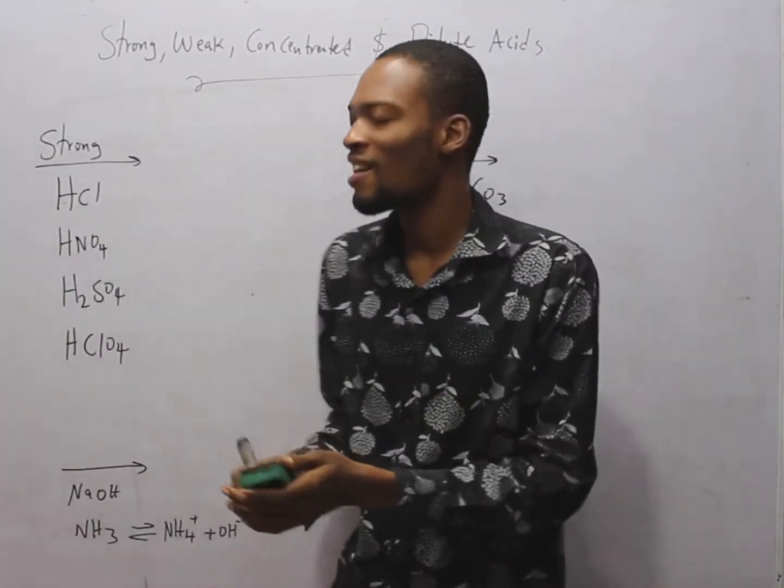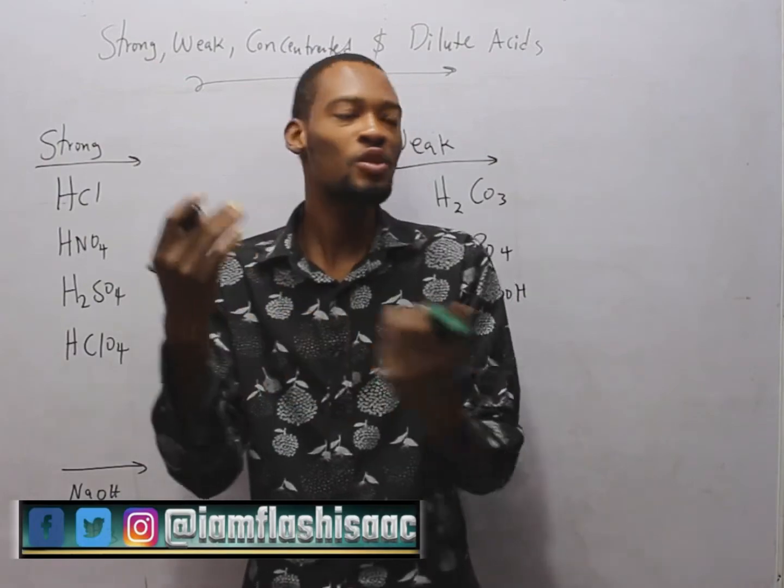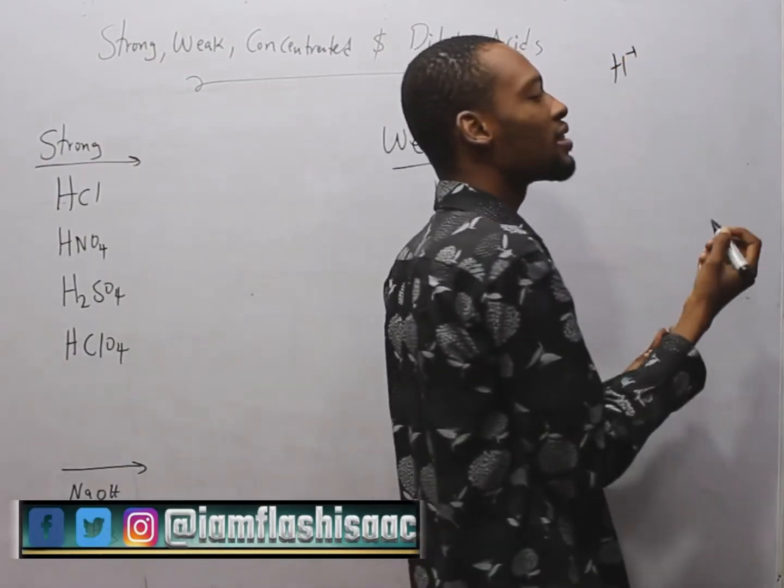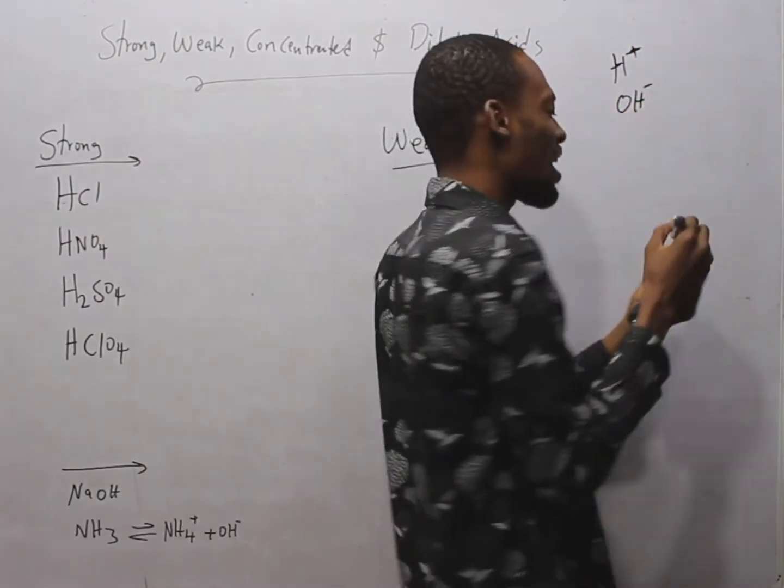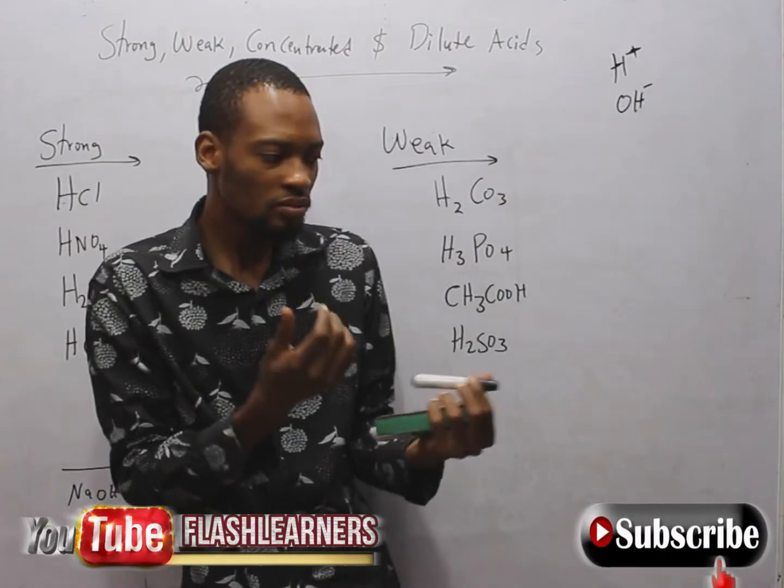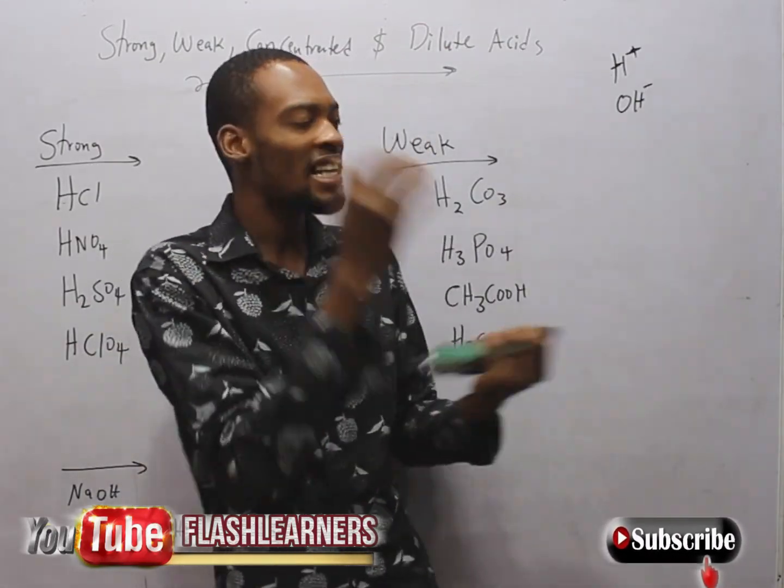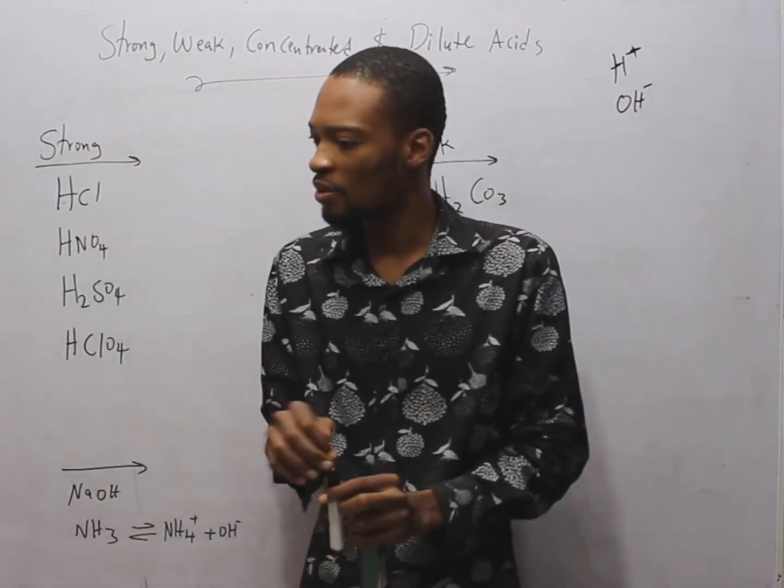According to Arrhenius, acid is a substance which dissolves in water to produce hydrogen ion, while base is a substance which dissolves in water to produce hydroxide ion. According to Bronsted and Lowry, an acid is a proton donor while a base is a proton acceptor.